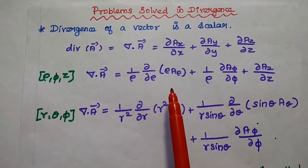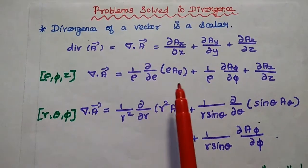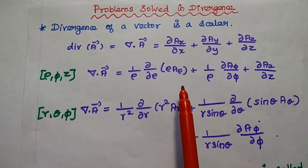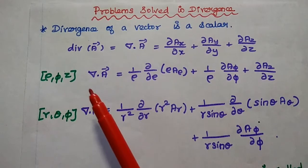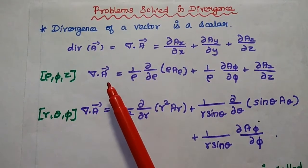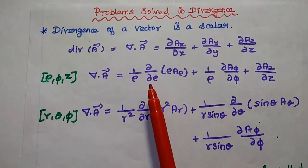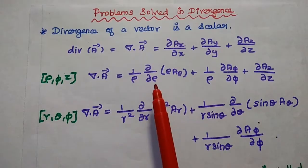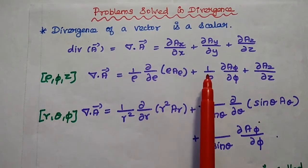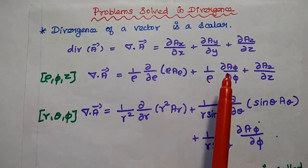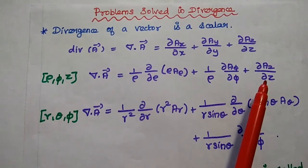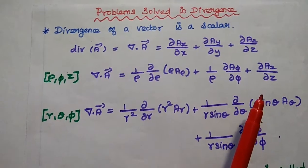The next one is for the cylindrical coordinate system. The coordinates are ρ, φ, and z. The divergence del dot A is equal to (1/ρ) ∂/∂ρ(ρ Aρ) + (1/ρ) ∂Aφ/∂φ + ∂Az/∂z.